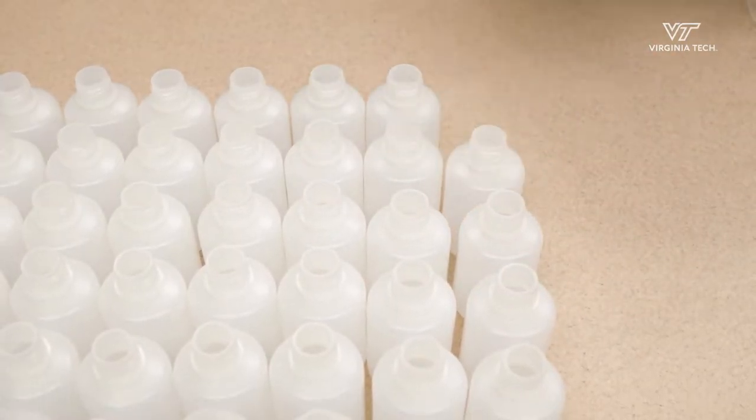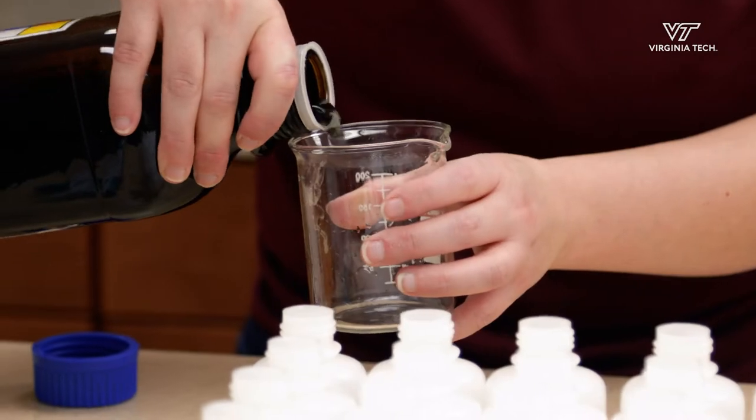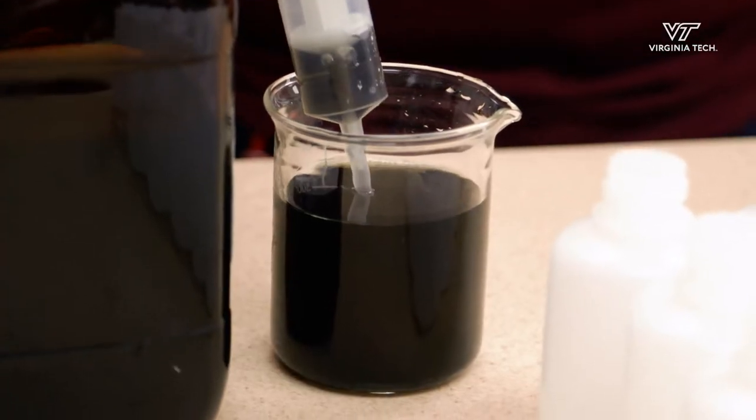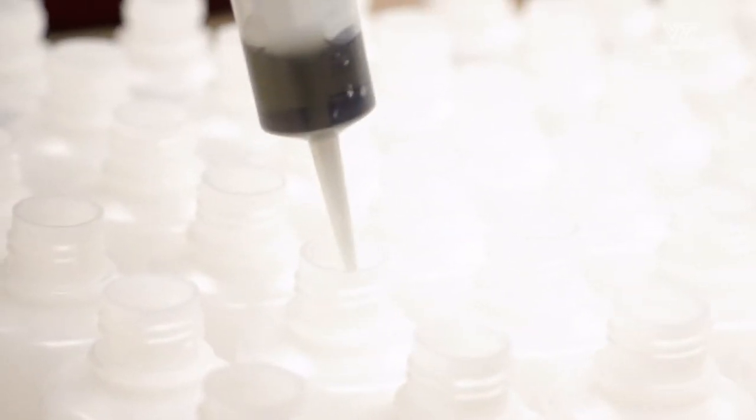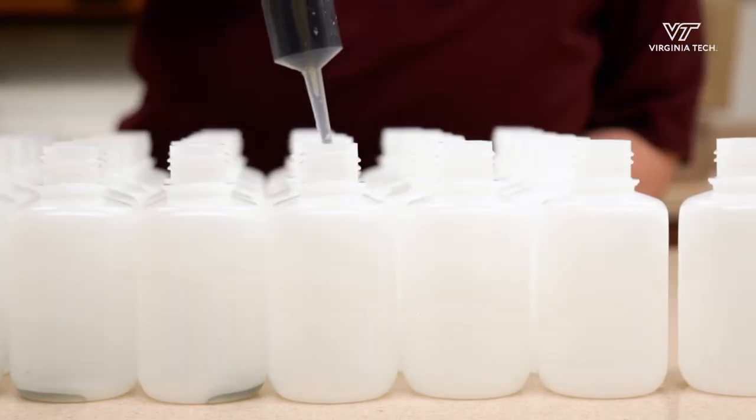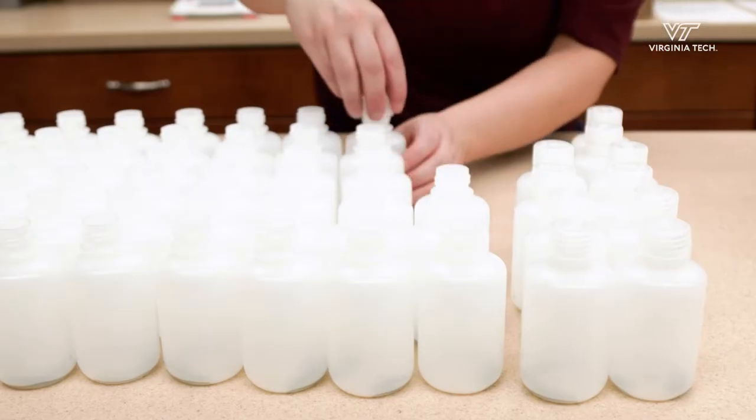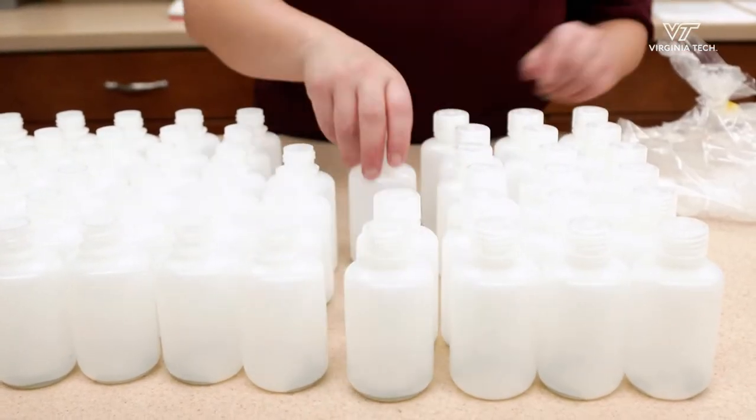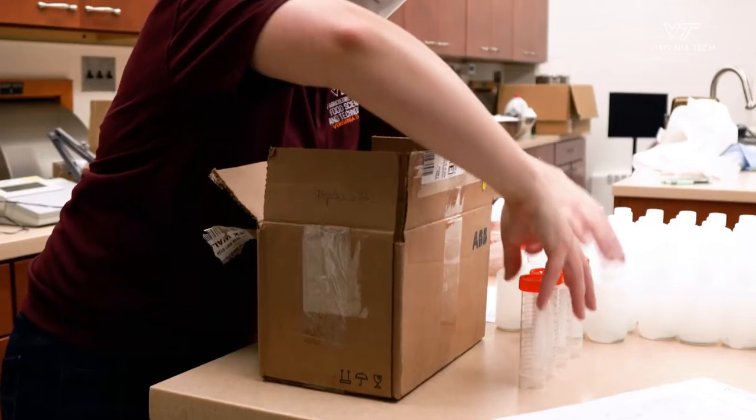Today I'm preparing juice harvest kits to send out to winemakers. These are bottles that contain a preservative. Winemakers will fill the bottles with their grape juice that they've just harvested, send that back to us for analysis so they'll know the chemical and nitrogen content before fermentation.